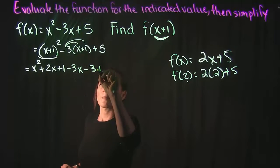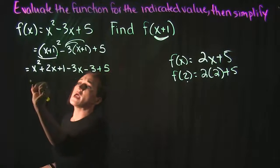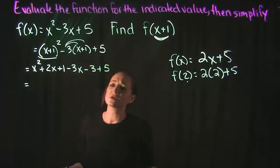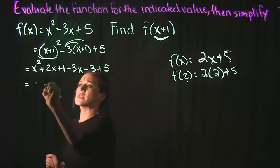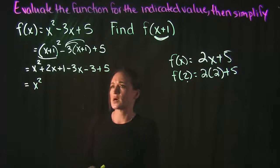Then drop down the plus 5. Our last step here is going to be to combine any like terms. It looks like x squared is the only squared term that we have there.